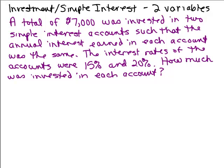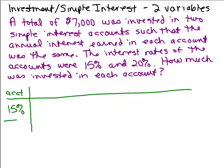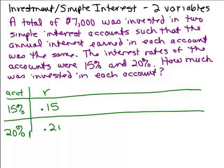All right, so looking through this, we're trying to find two things. How much was invested in each account? So that's why this is a good problem to use two variables. So I like to keep my information in a chart. So I have two different kinds of accounts. I've got a 15% account and a 20% account. So I'm going to write my rate using a percent, 0.15 and 0.20.